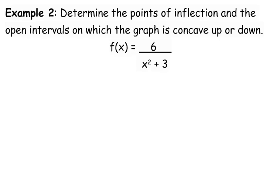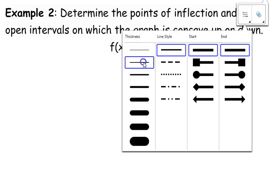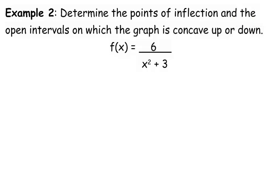We are determining our points of inflection and the open intervals for which the graph is concave up or concave down. We need to begin by taking the derivative. Now, you actually have a choice when taking the derivative — technically you don't have to do the quotient rule. You could rewrite this as x squared plus 3 to the negative first and do a chain rule, but I'm going to stick with the quotient rule because it helps the point I'm getting ready to make. Concavity is about the second derivative, but before we get there, we've got to take the first derivative.